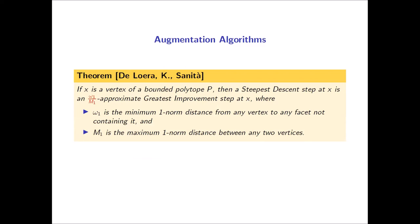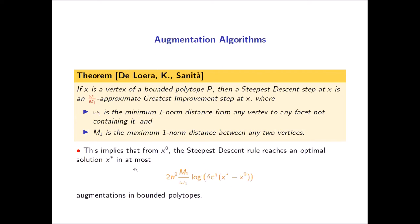What Lauren, Jesus, and I show is that if we have an LP with a bounded feasible region and we're at a vertex, the steepest descent circuit step is an approximation of the greatest improvement step, with approximation ratio omega_1 over m_1, where omega_1 is the minimum one-norm distance from any vertex to any non-containing facet, and m_1 is the maximum one-norm distance between any two vertices. Using this, starting from any initial vertex x_0, the steepest descent circuit pivot rule reaches an optimal solution in at most 2n² · (m_1 / omega_1) · log(delta) steps, where delta is the maximum absolute value of any sub-determinant of the linear system.